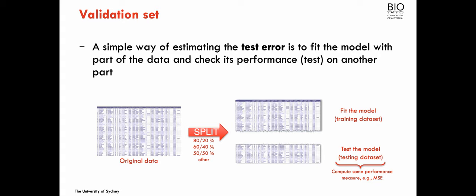One simple way of doing this is to, from the beginning, split the original dataset in two parts: use one part to fit the model, called the training dataset, and the other part to test the model, called the testing dataset. This split can be 80-20%, 60-40%, or 50-50%. There are really no guidelines about the best choice — it depends on the size of the dataset, but 80-20% and 50-50 are common choices.